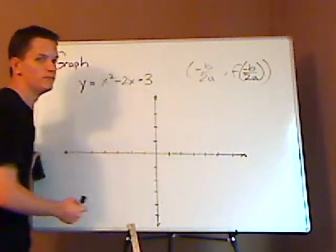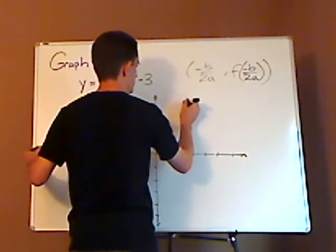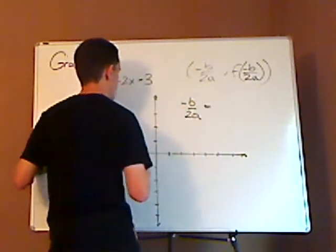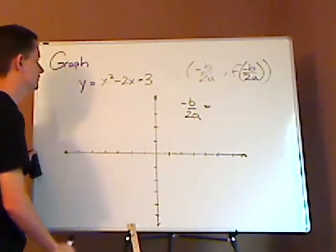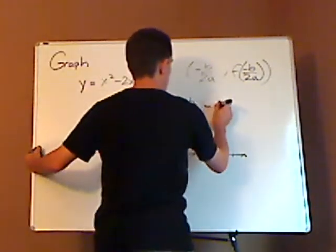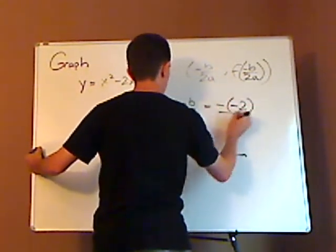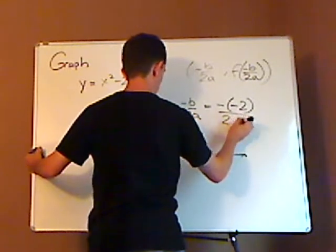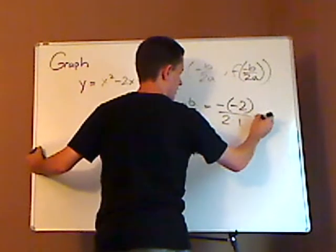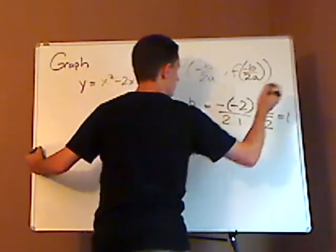So I have to find negative b over 2a. Well, negative b over 2a, I can simply just plug those in. The b here is negative 2, and your a is 1. So that would be negative negative 2 over 2 times 1. Negative times negative 2 is positive, so it's positive 2 over positive 2, which equals 1.